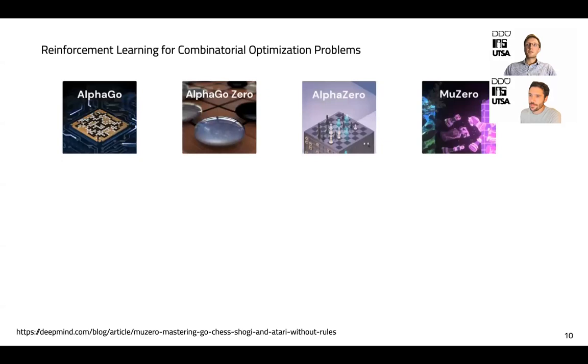Reinforcement learning showed great success in strategic games in recent years. Notably, the algorithms from DeepMind were able to beat the best human players in Chess, Go and Shogi. These board games require long-horizon strategic planning over a combinatorial number of action sequences.